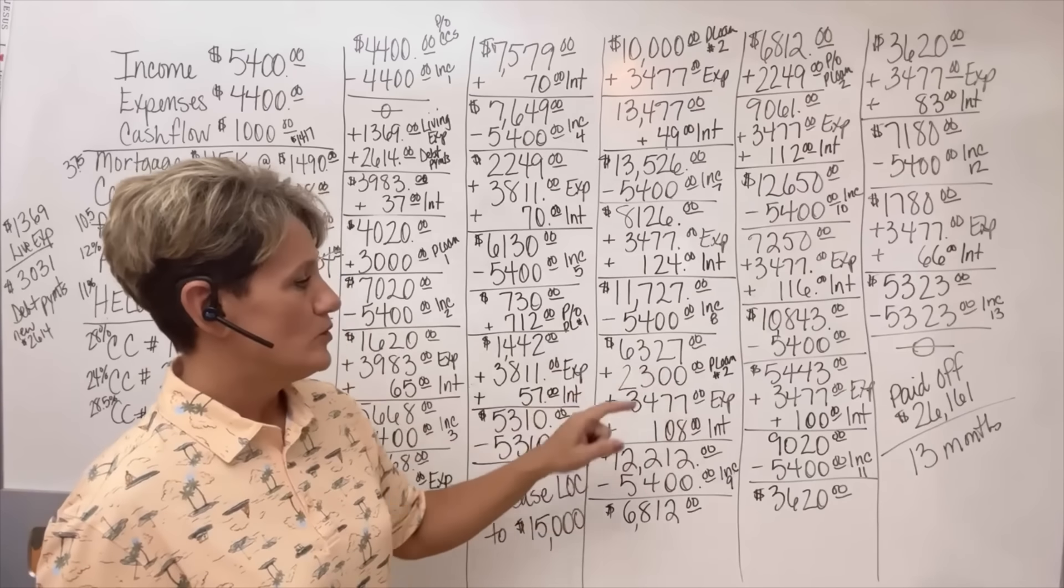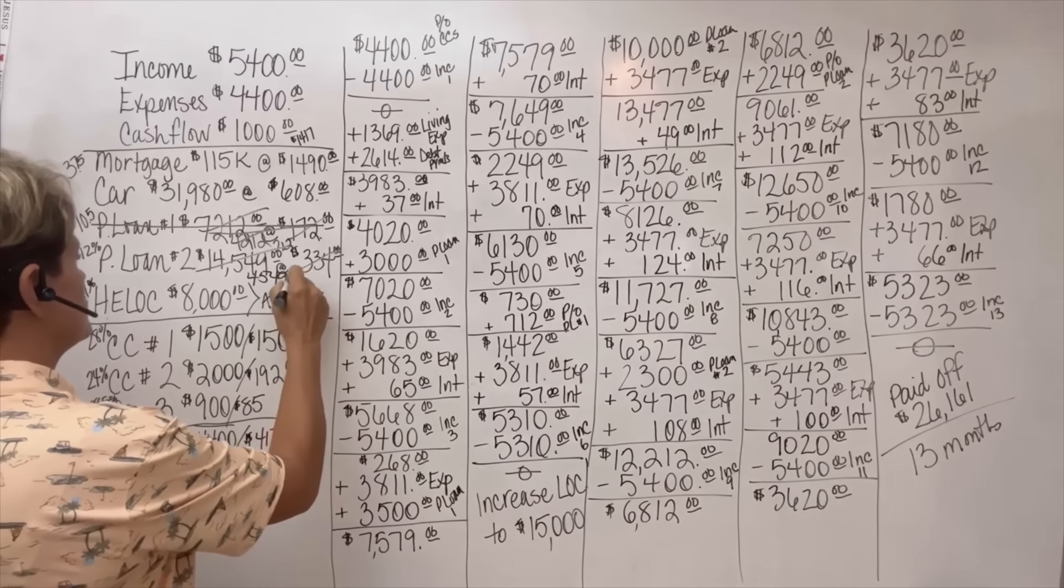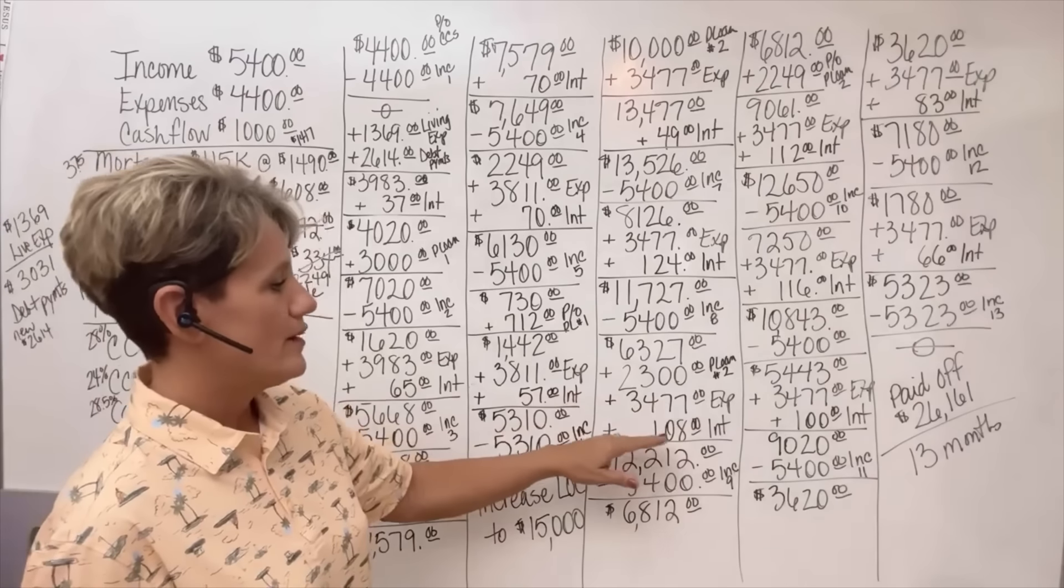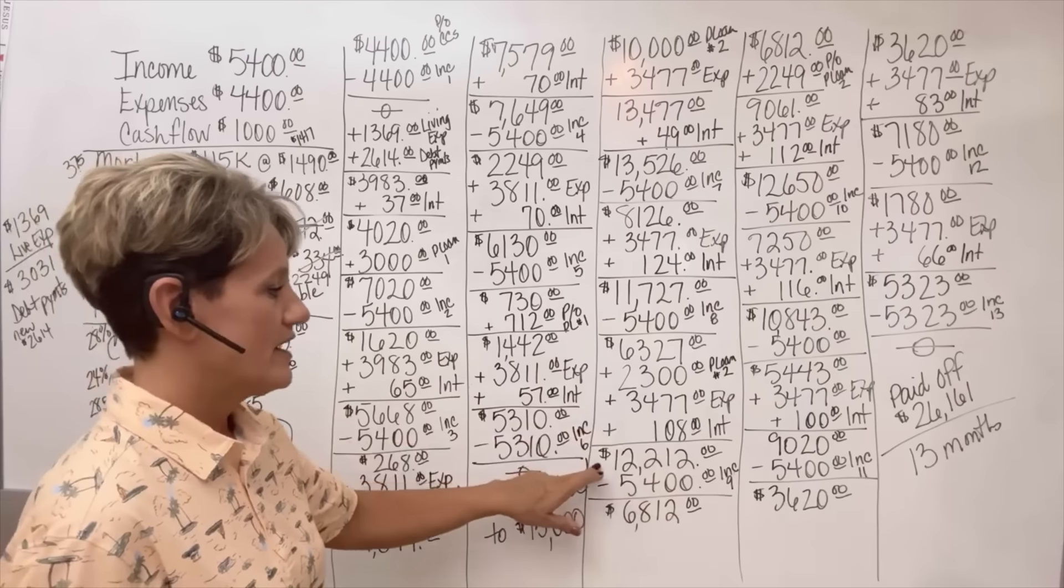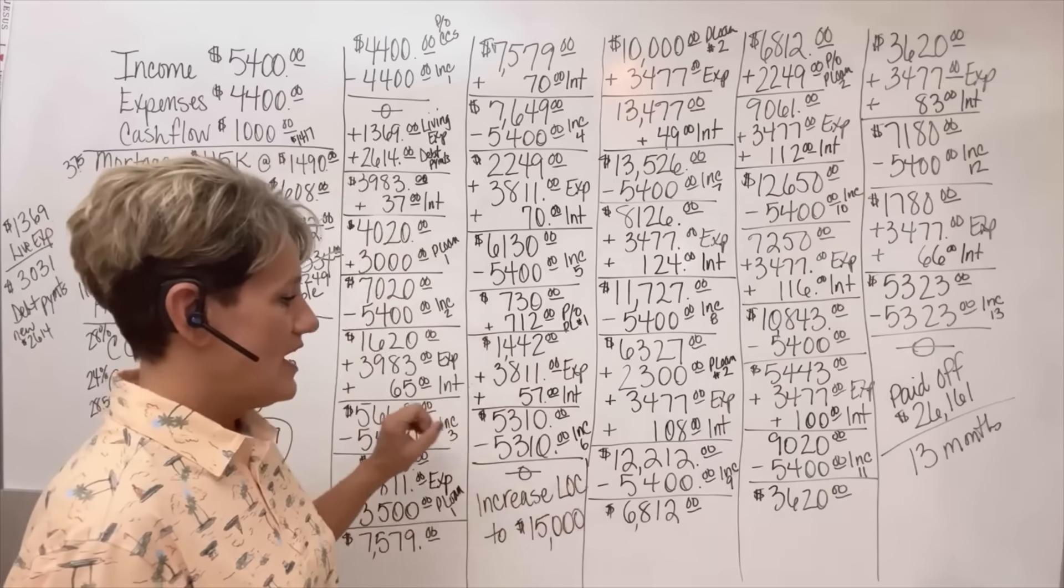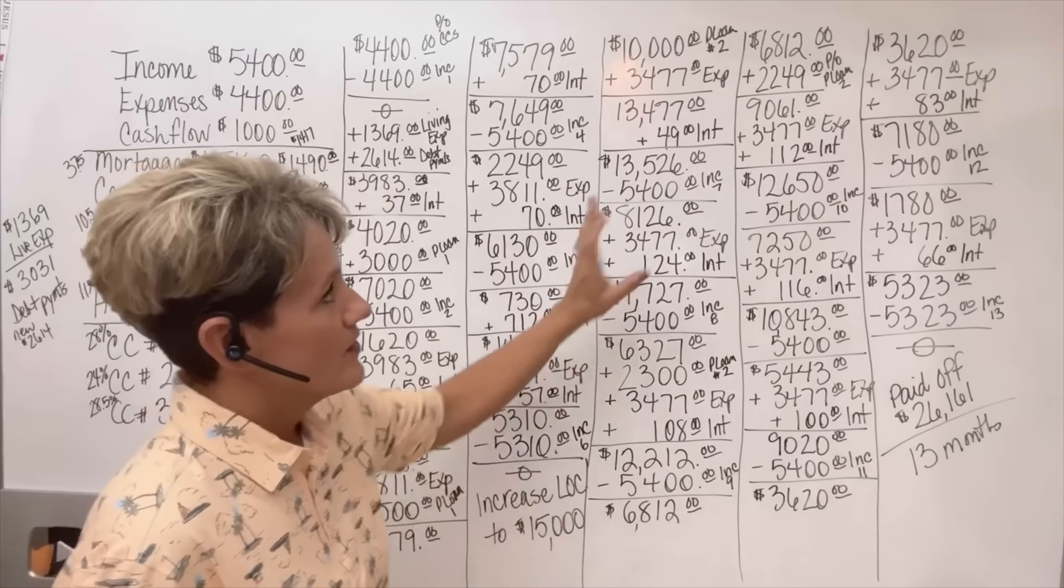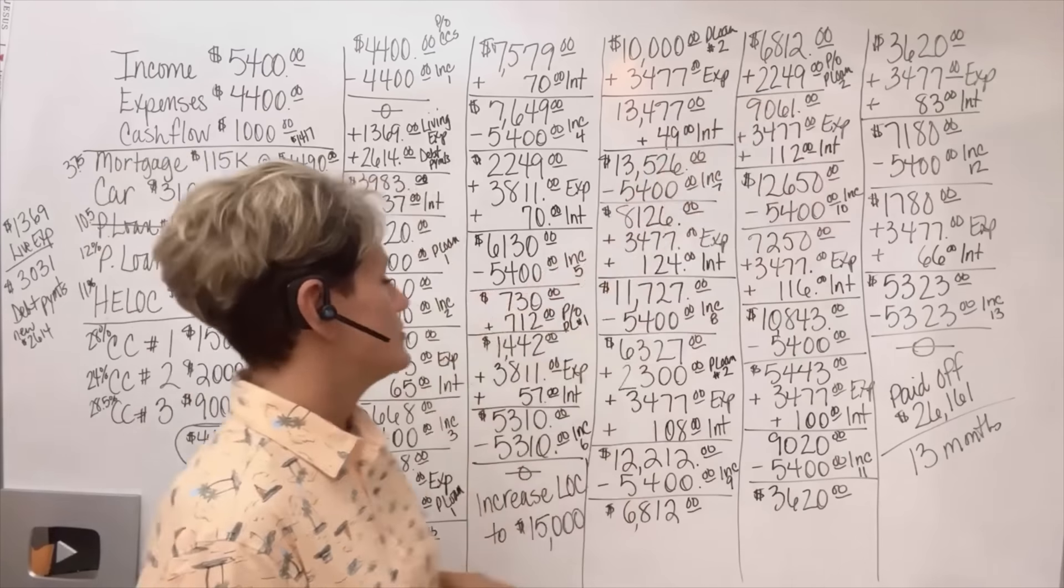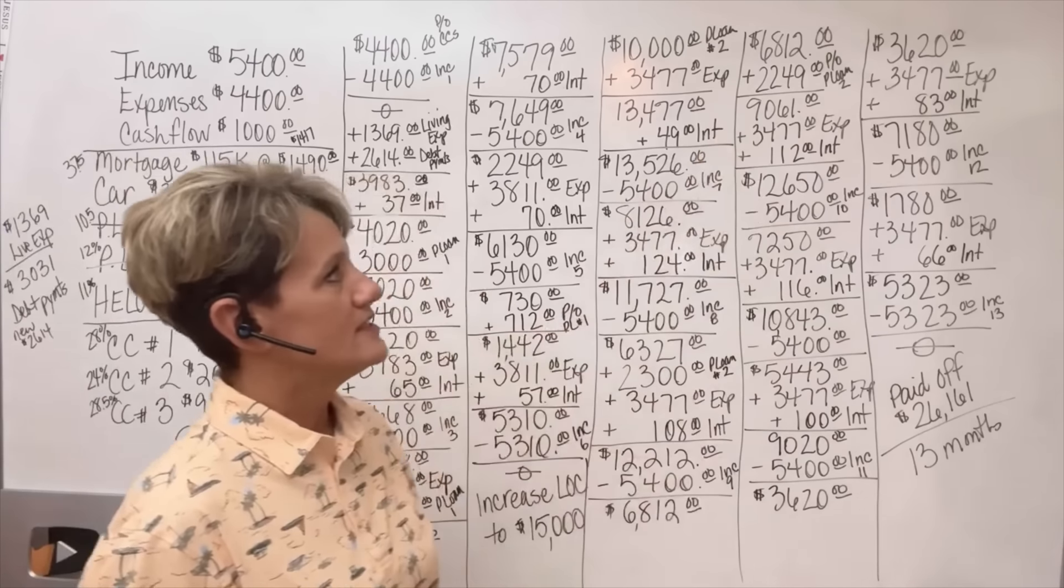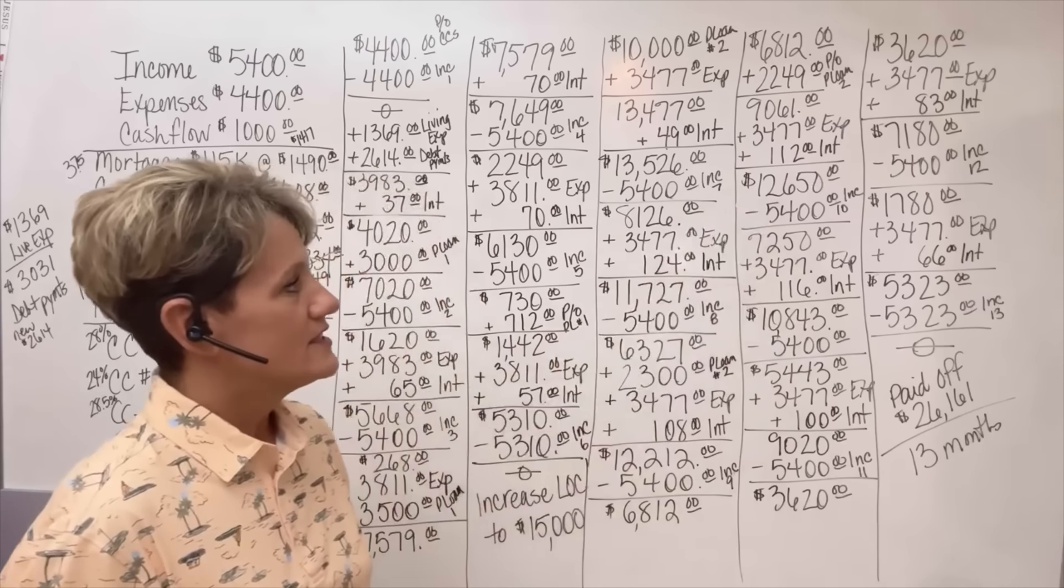He put $2,300 more dollars onto personal loan number two, bringing that balance down to $2,249. His expenses would come out through the month, as would his interest, bringing him back up to $12,212. Then in month nine, his income goes in again, bringing him back down to $6,812. In month nine, he's going to pay off personal loan number two, bringing him back up to $9,061. His expenses and interest will come out again, bringing him back up to $12,650.